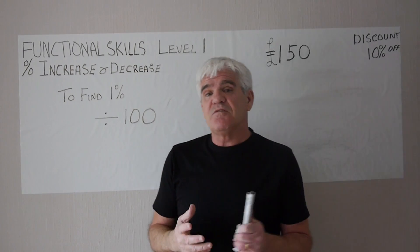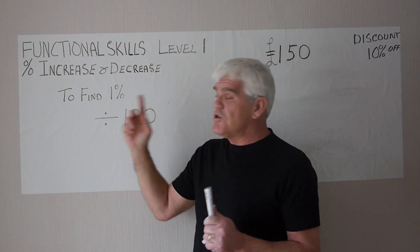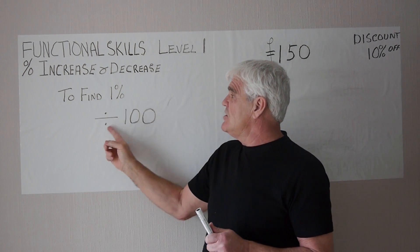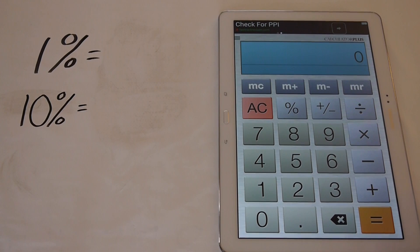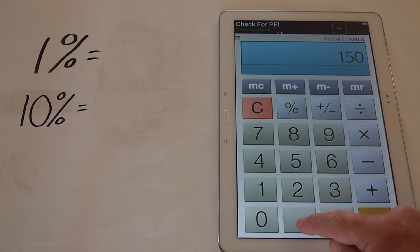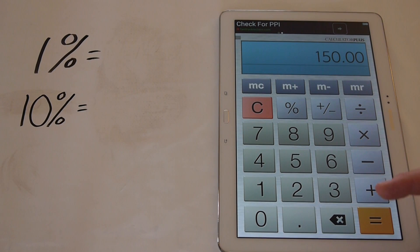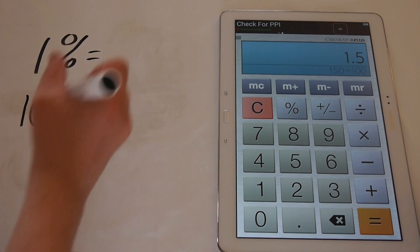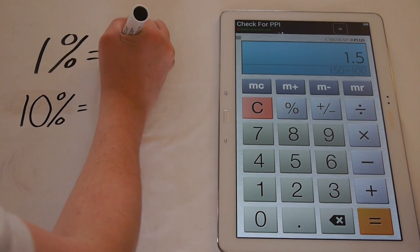And the best way to find a percentage of a number, the first thing to do is to find 1%. And to find 1% of a number, you need to divide by 100. We've been asked to find 10% of 150 pounds, so we key in the big number first, 150. Remember, we want to find 1%, so we divide by 100. This is the divide button, divide by 100, and that is equal to 1.5. So we know that 1% of 150 pounds is equal to 1.5, 1.50.